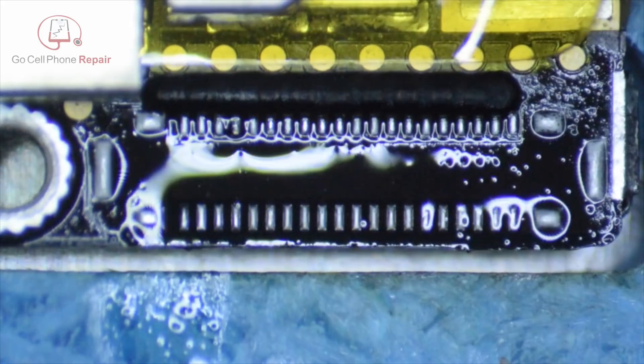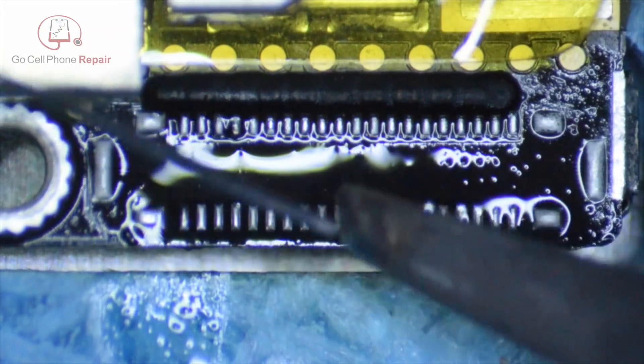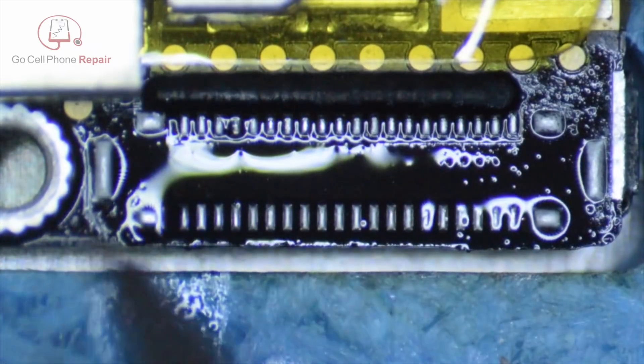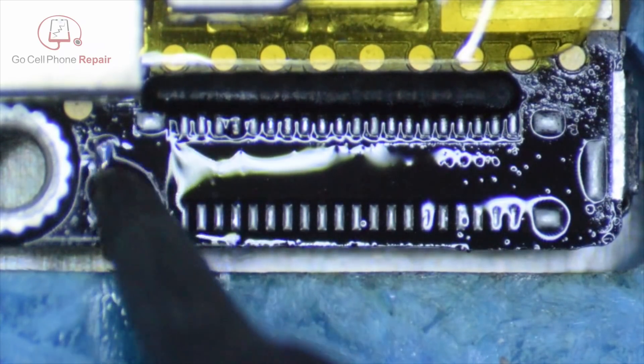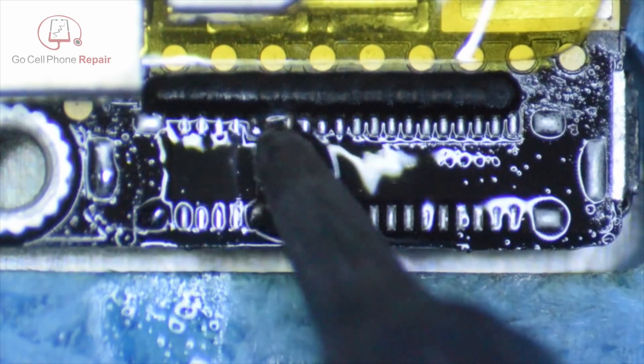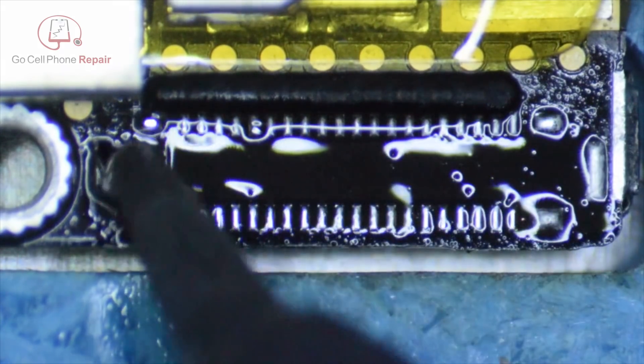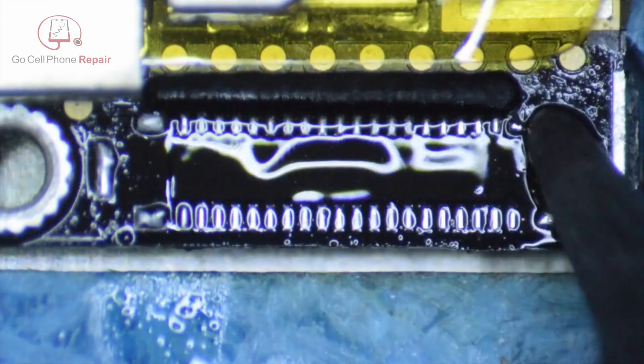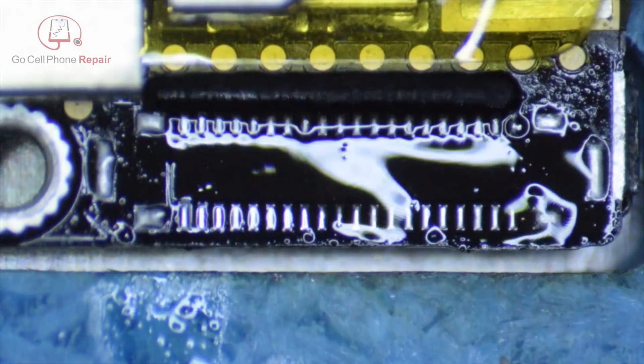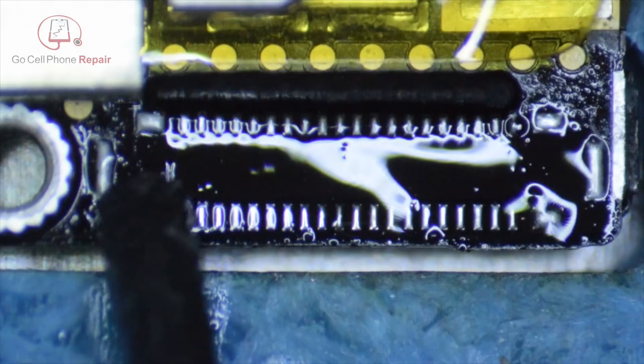All right, so that's clear. From here, I'm going to add some leaded solder. This is probably another questionable step. We could most likely take our wick and just go over the connectors at this point and clean it up. But just to make things easier, I always like to mix in a bit of lead.